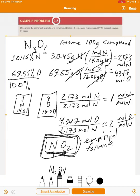So assume 100 grams of the compound. That allows you to use the percentages as grams. Divide by the molar mass of each element. That will give you the moles. Divide by the smaller or smallest if there's more than two elements. And then that will give you whole numbers.